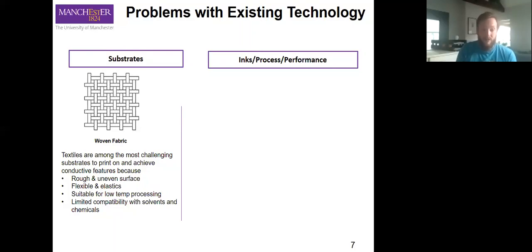They often have a rough and uneven surface, they're flexible, they're elastic, they're usually suitable for low temperature processing—higher becomes more challenging—and they have a limited compatibility with solvents and chemicals. For example, if you look at the woven fabric, while this is a fairly tight weave, there are quite large pore sizes between.